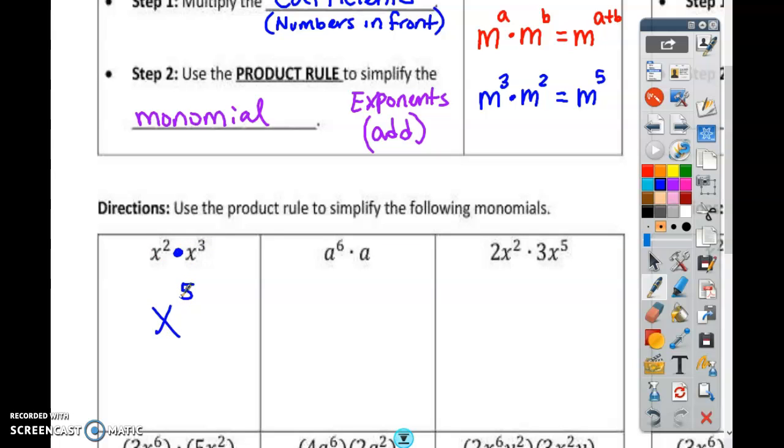Why is it x to the fifth power? How many x's do I have here? 2. One, two. How many x's do I have here? 3. One, two, three. How many x's do I have in total? 5. x to the fifth power. You just add the 2 and the 3.